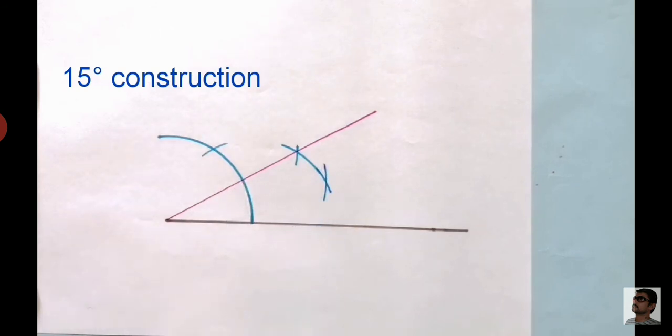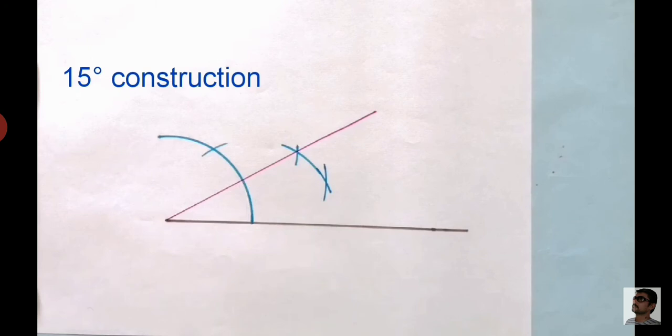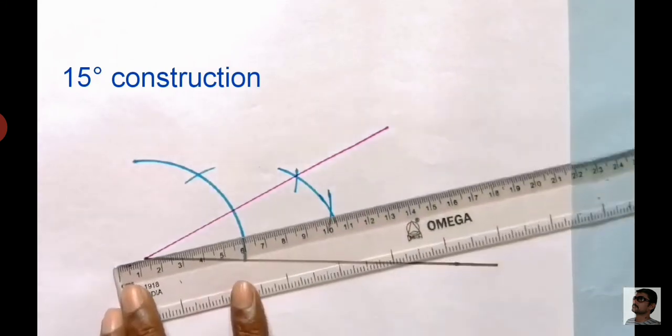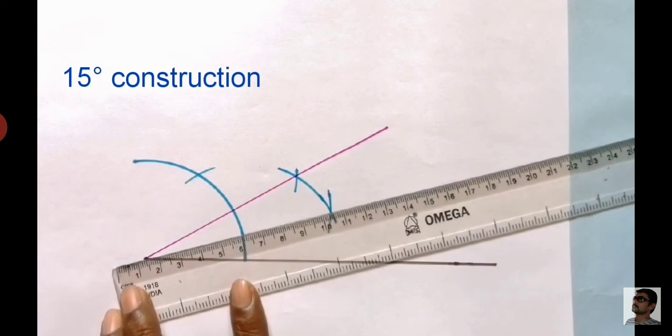This intersection point will represent an angle of 15 degrees. We can join them with the help of a scale and pencil.